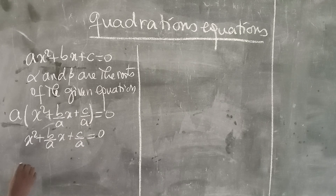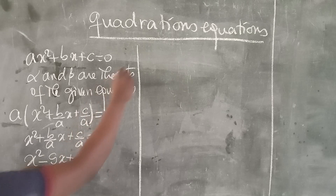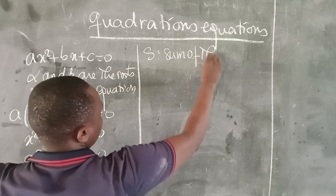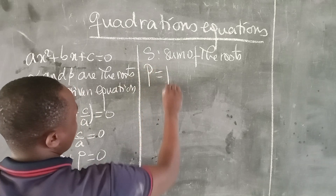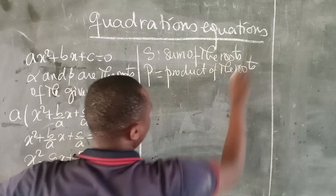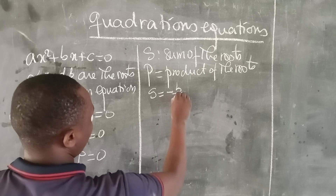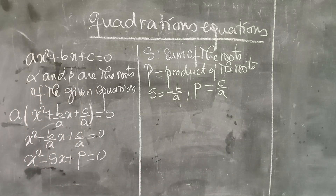In short, this equation becomes x² − S·x + P = 0, where S here is the sum of the roots and P here is the product of the roots. In short, S equals negative b/a and P equals c/a.